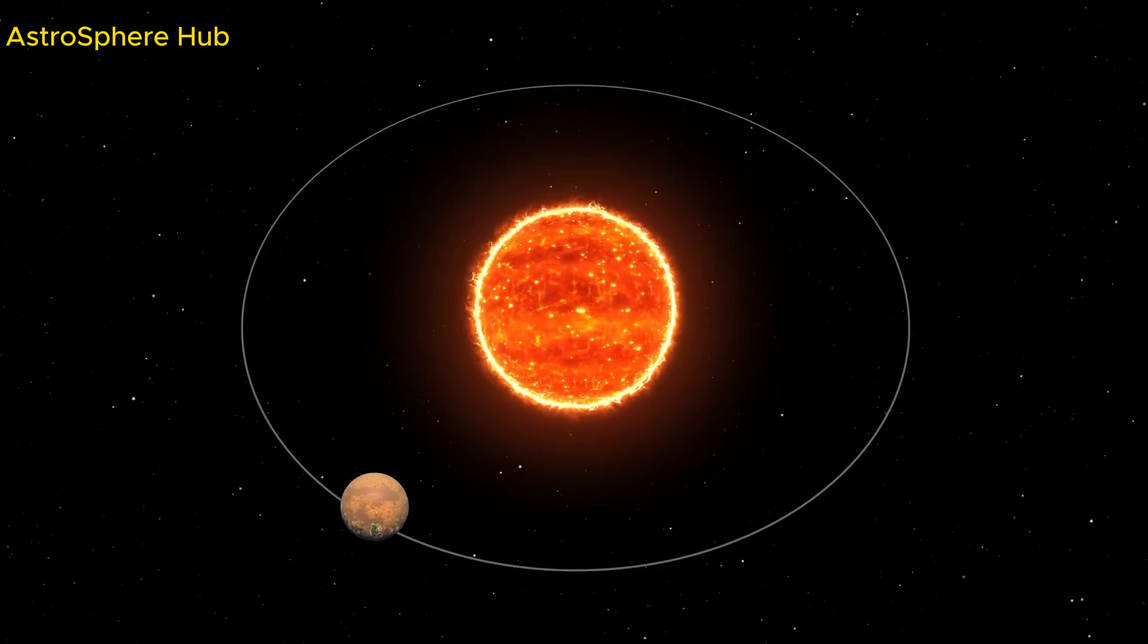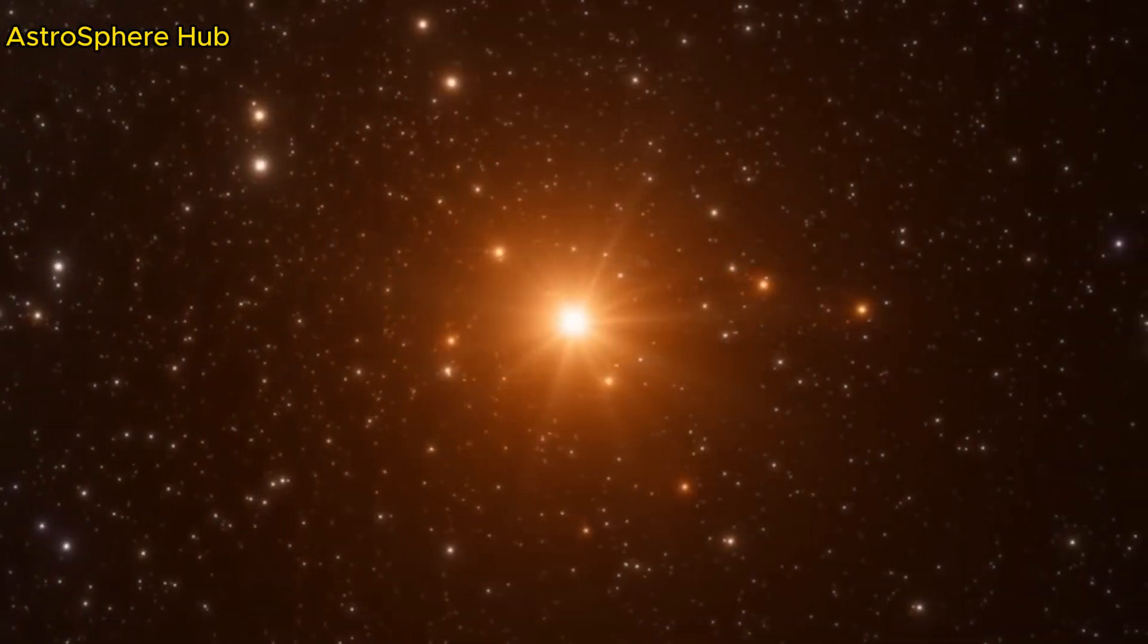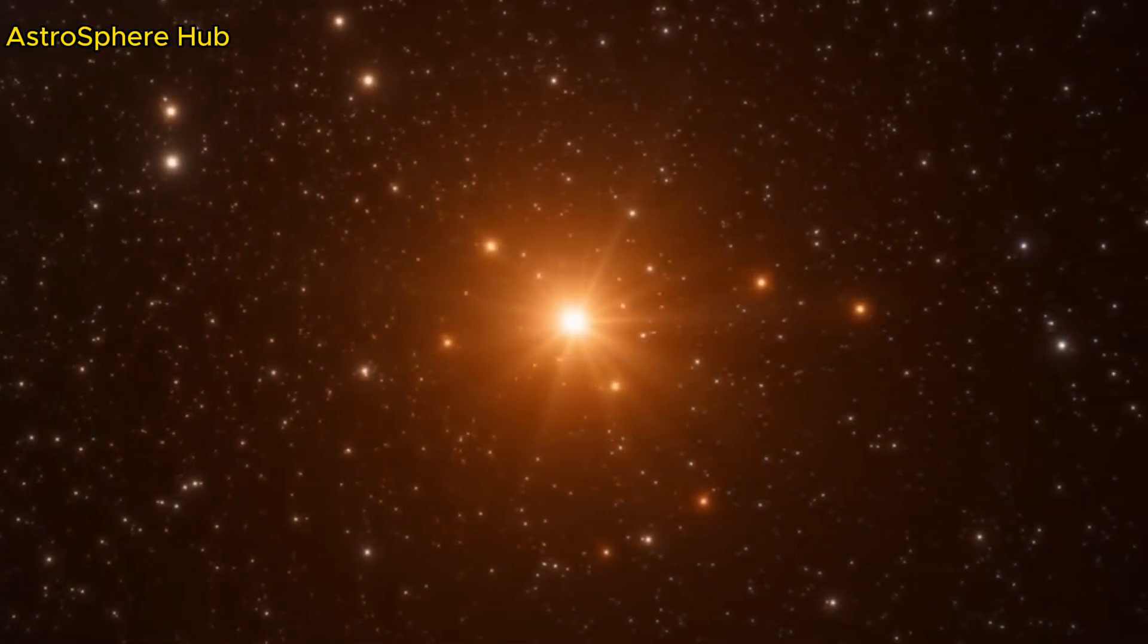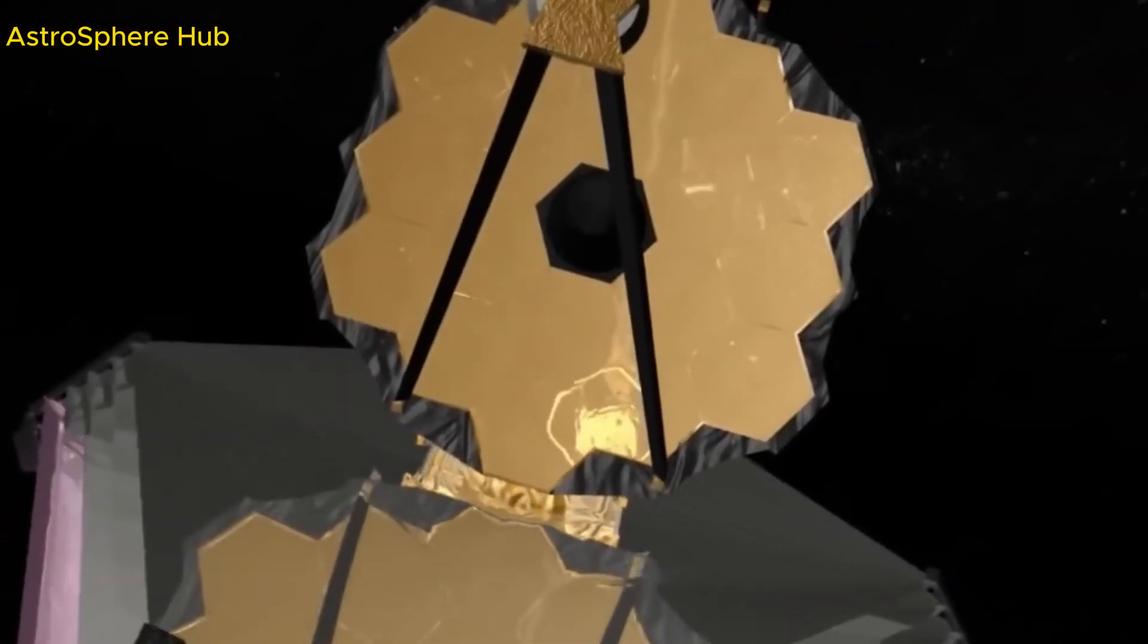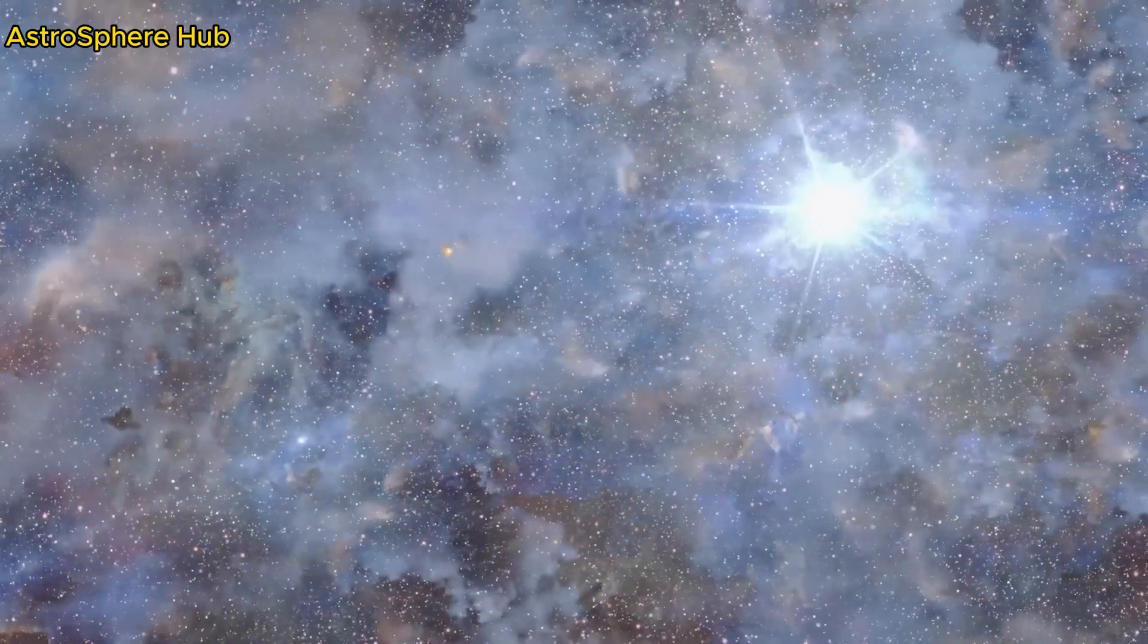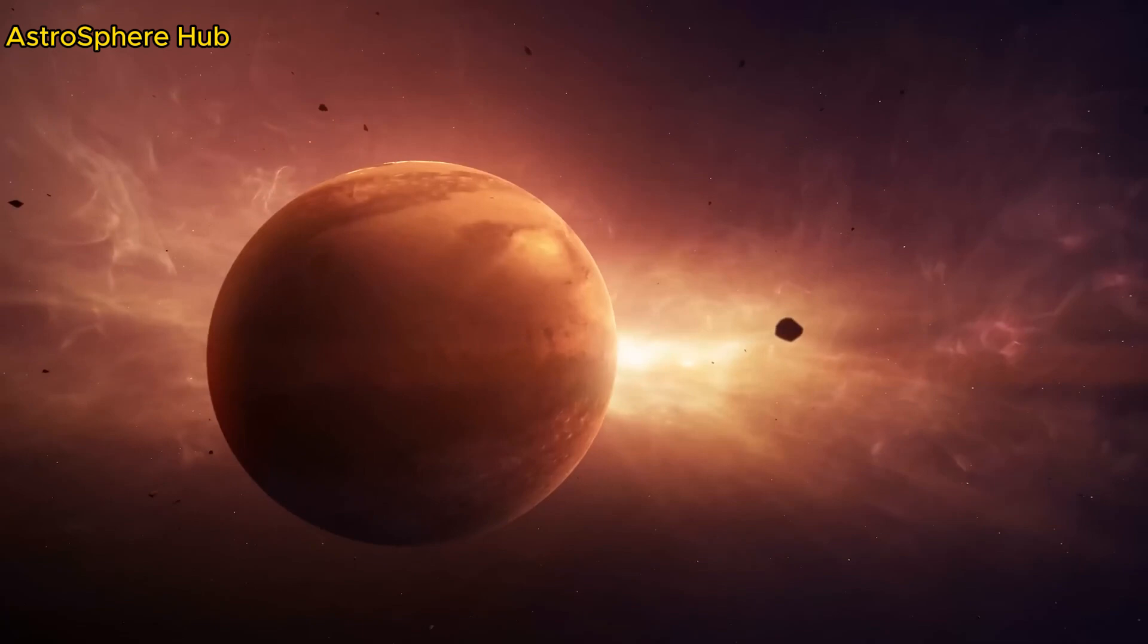However, as we've mentioned earlier, even though they're normally dim, many red dwarfs can suddenly and dramatically increase their brightness. This supercharged mode is like a star shooting out solar flares on steroids.